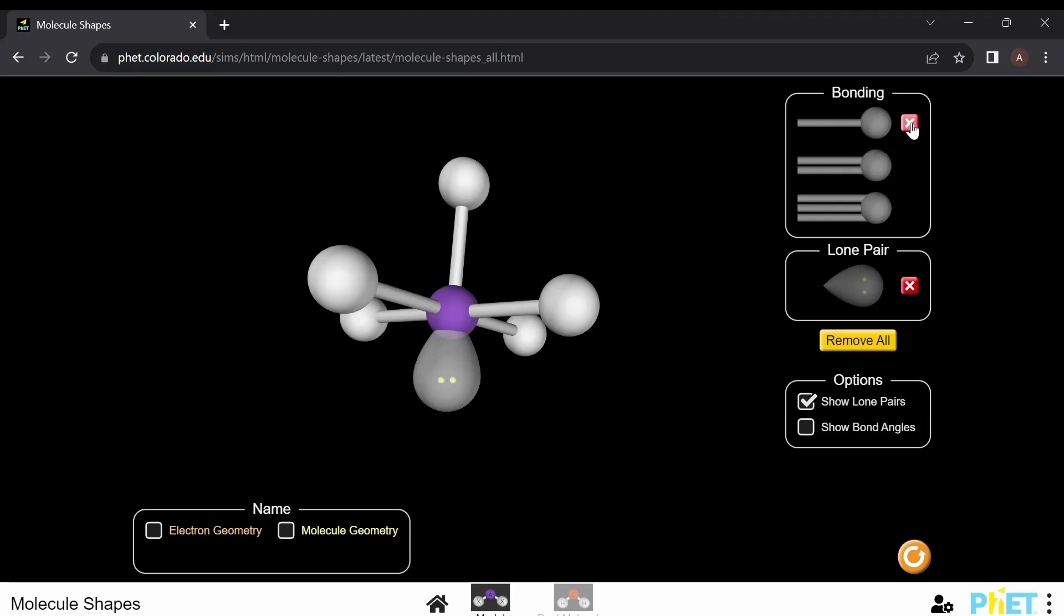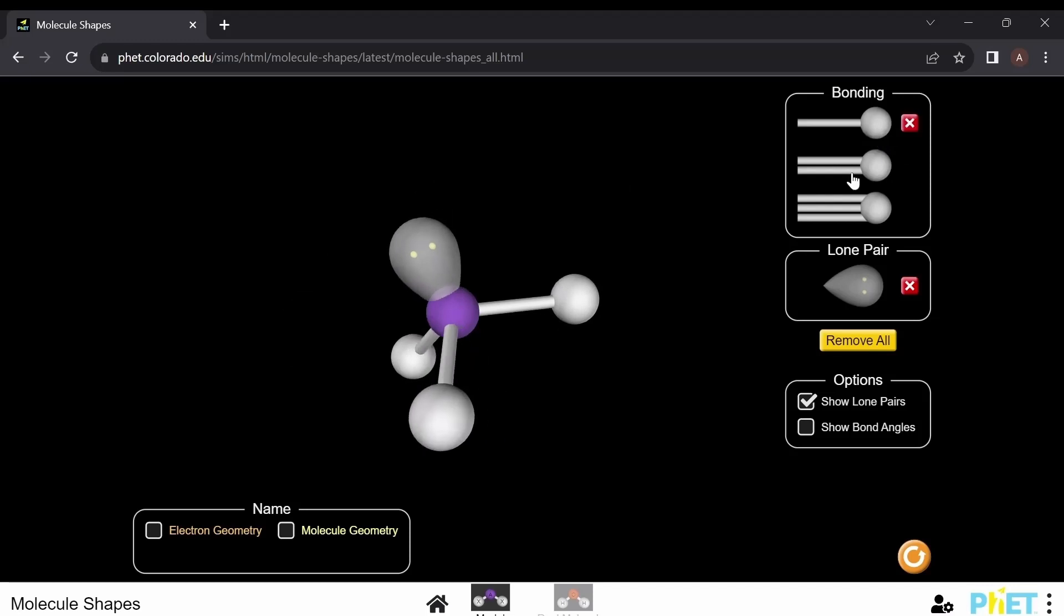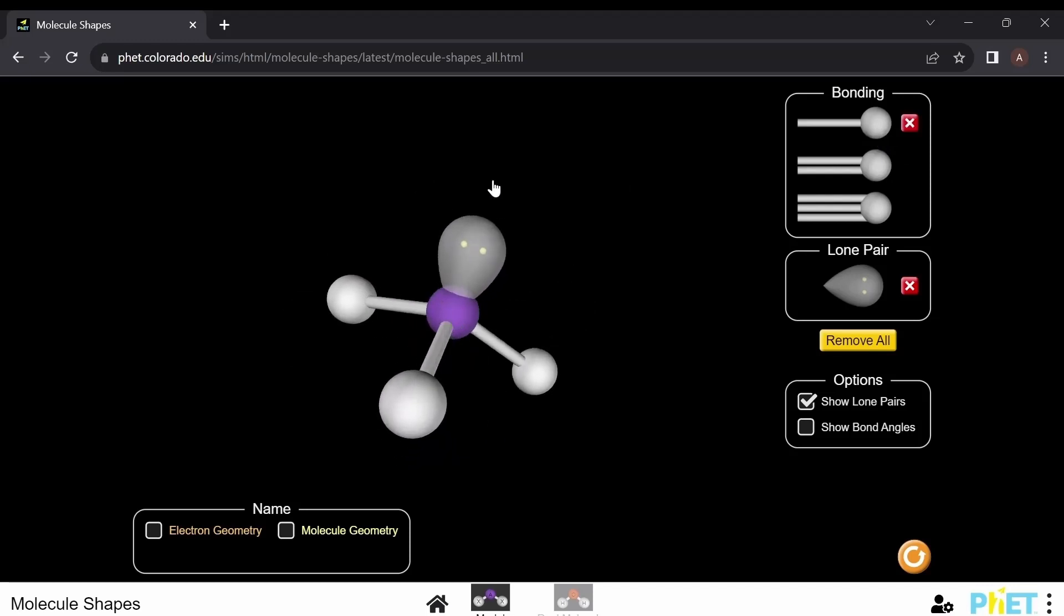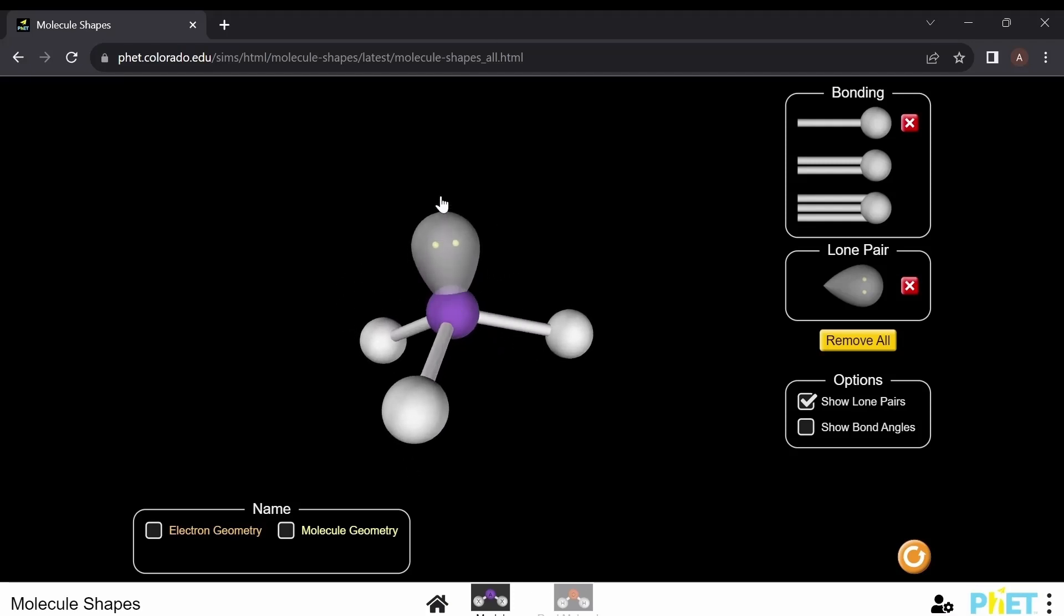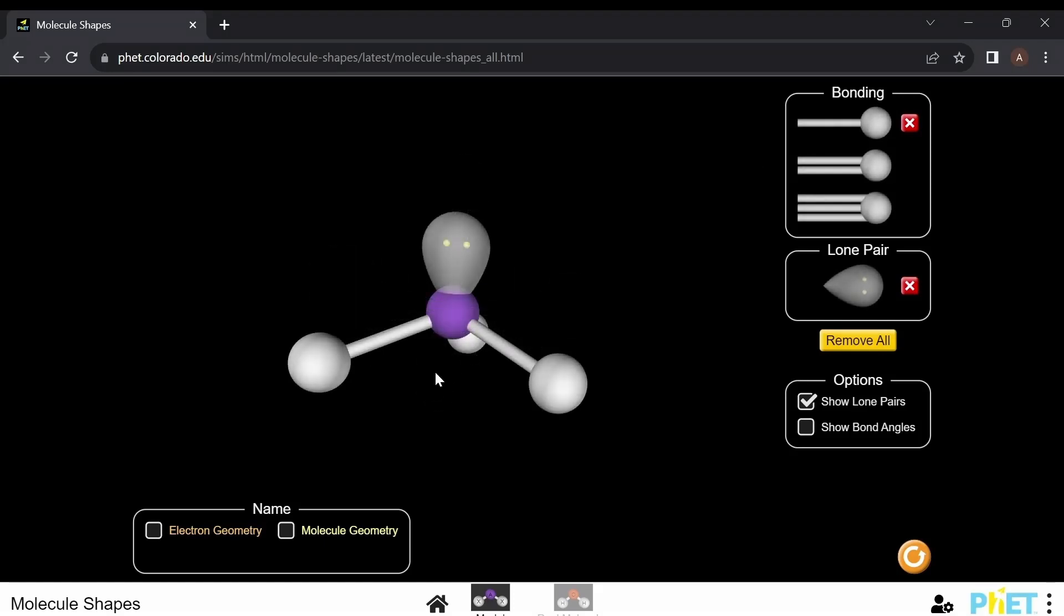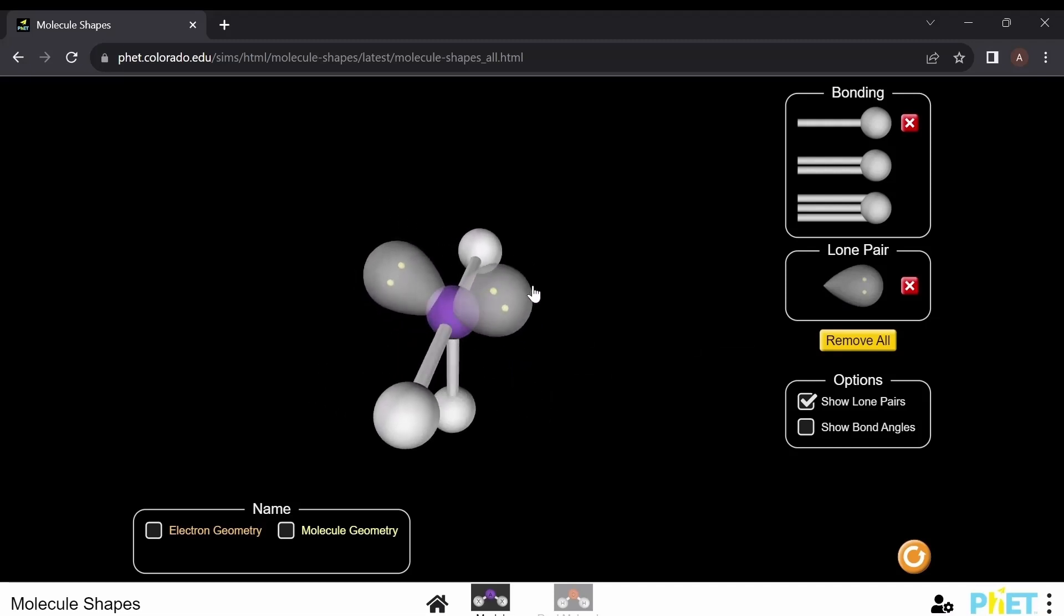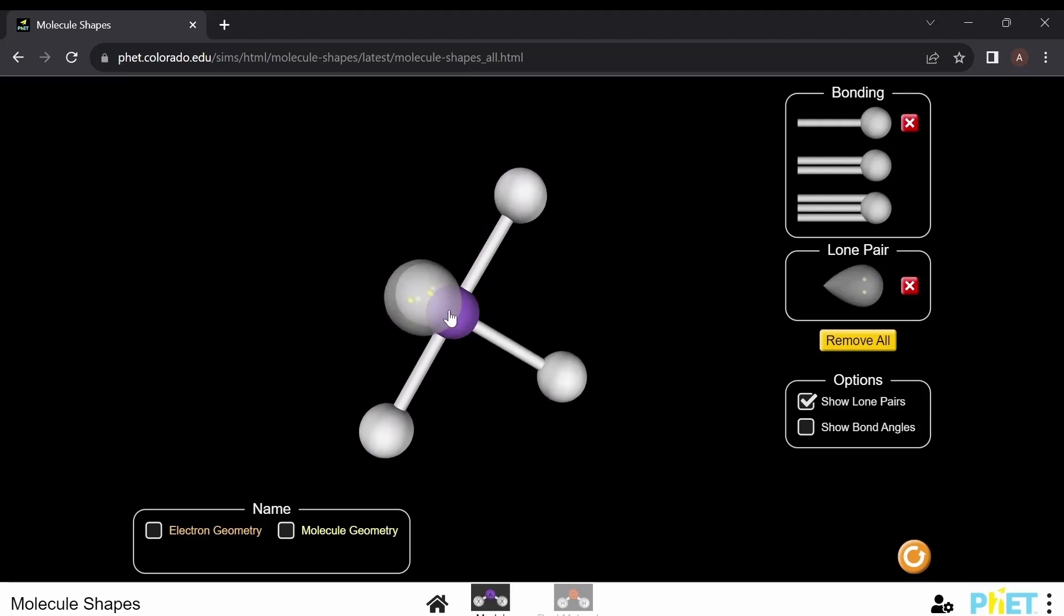Sequential removal of two ligands will turn the square-based pyramid into a pyramidal complex, where we have three ligands and a non-bonding pair of electrons on the metal. Addition of the second pair of non-bonding electrons will transform the pyramidal complex into a T-shaped geometry, which is again driven by the tendency of the molecule to maintain a maximum distance between the ligands and non-bonding pairs of electrons.